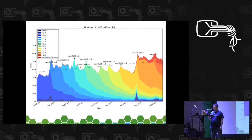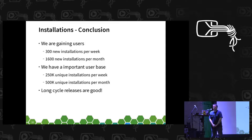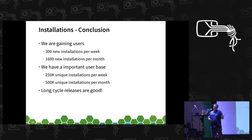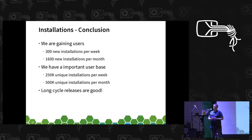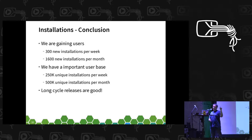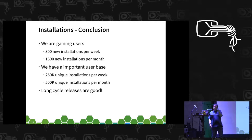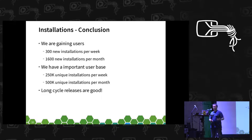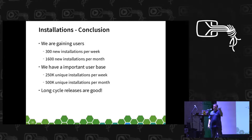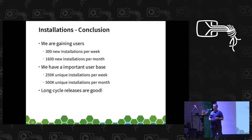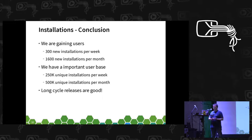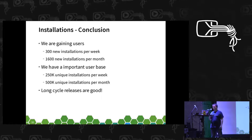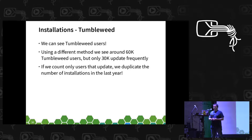We can also see Factory and Tumbleweed in this monthly view, which is amazing. Some interesting conclusions: in the linear model we can see 300 new installations per week, which is around 1,060 new installations per month. If we focus from 13.2 onwards to Factory, we have a much higher rate of increase. We are seeing 250K unique installations in a week, roughly 500K unique installations in a month. Long release cycles are really good for the project.